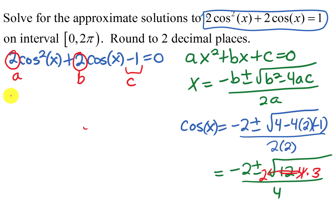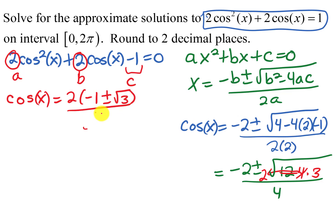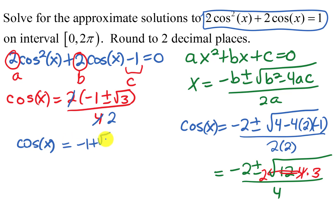Factoring a 2 out of the numerator gives negative 1 plus or minus the square root of 3, and that 2 cancels with the 4 in the denominator, leaving 2. So there are two solutions from the quadratic formula: cosine x equals negative 1 plus the square root of 3, all over 2; and cosine x equals negative 1 minus the square root of 3, all over 2.